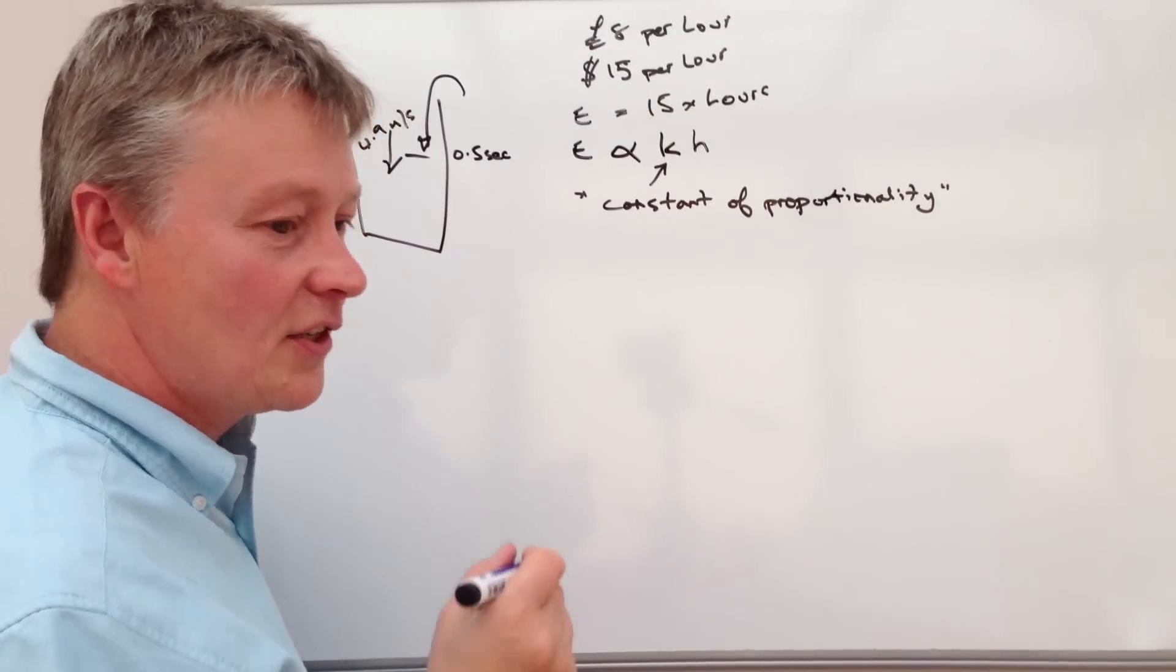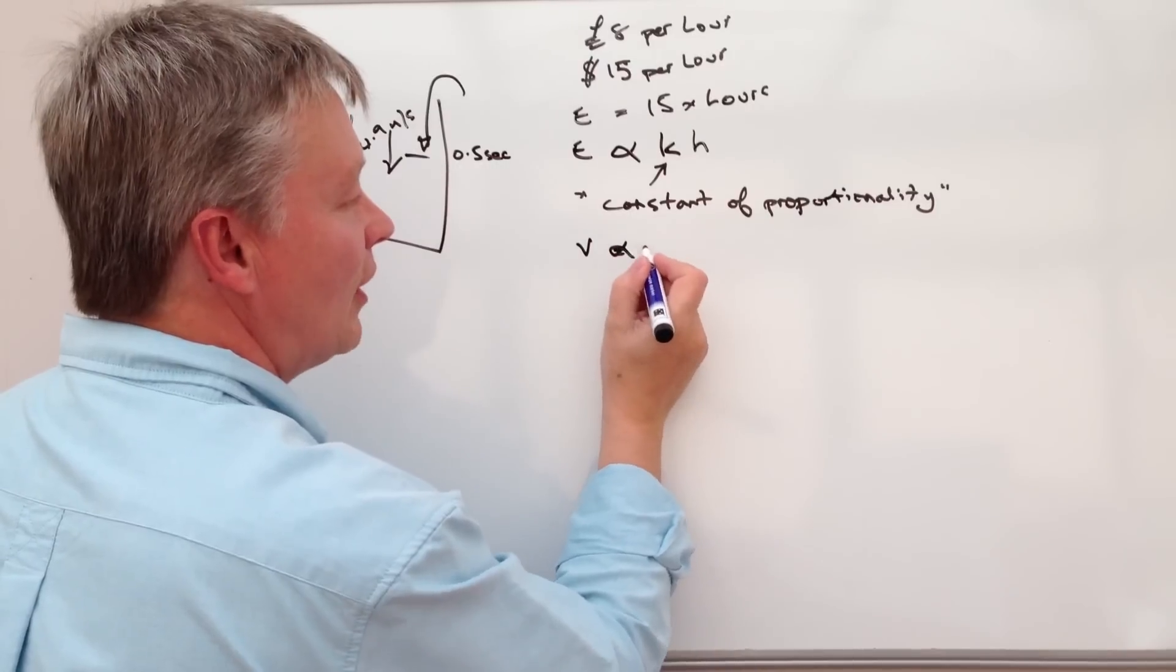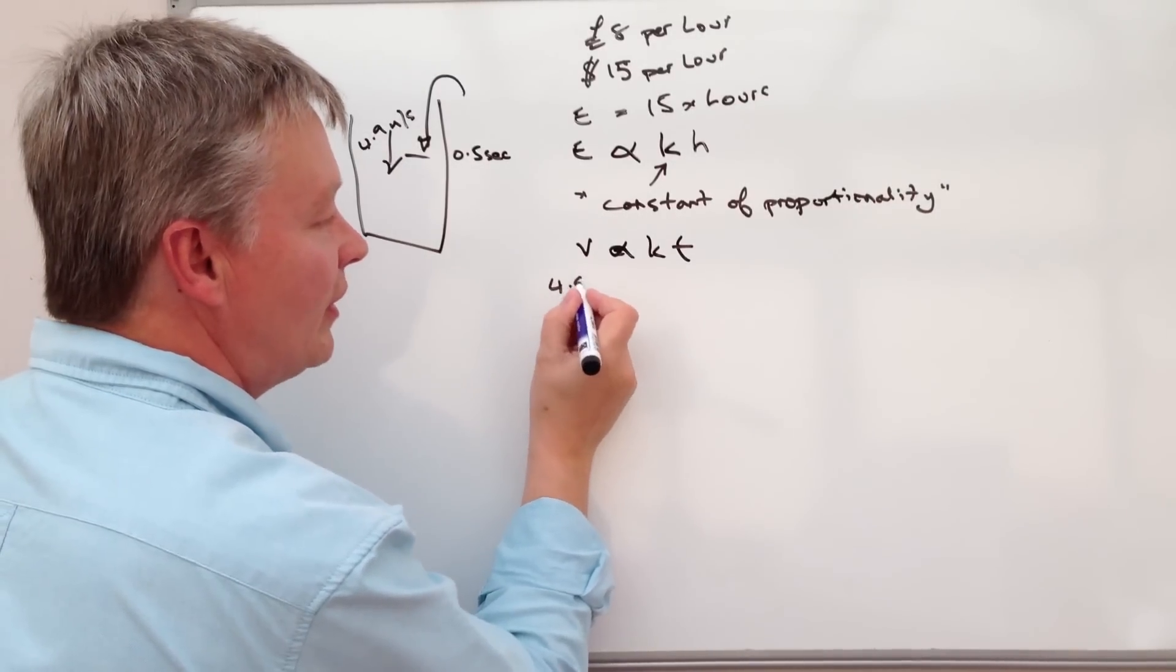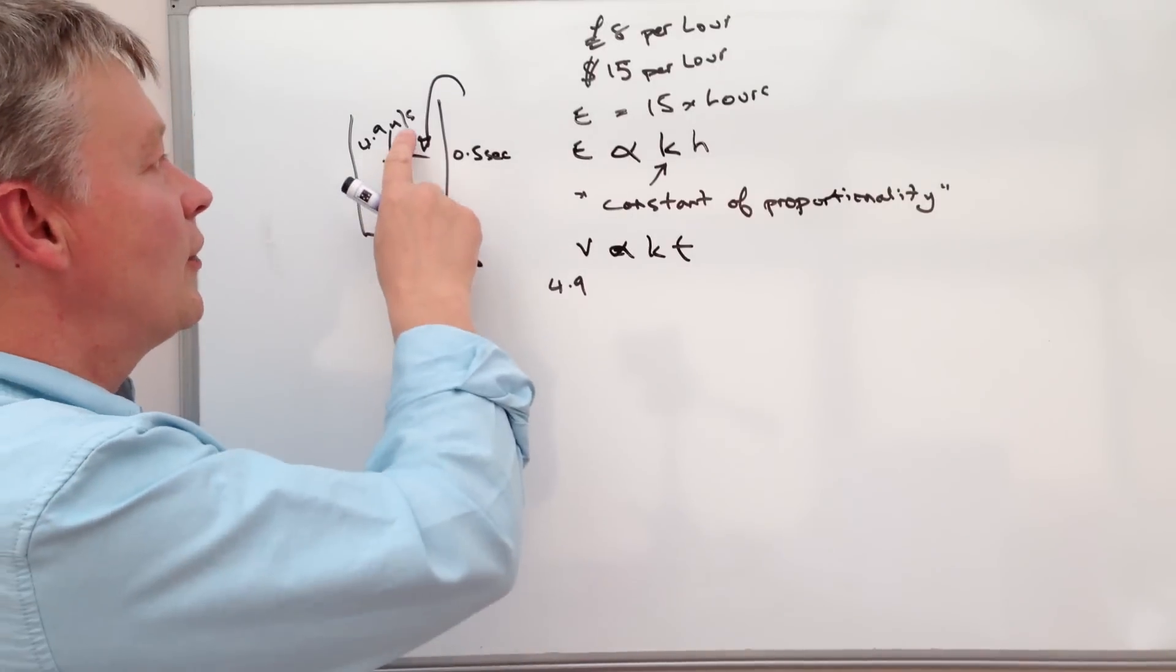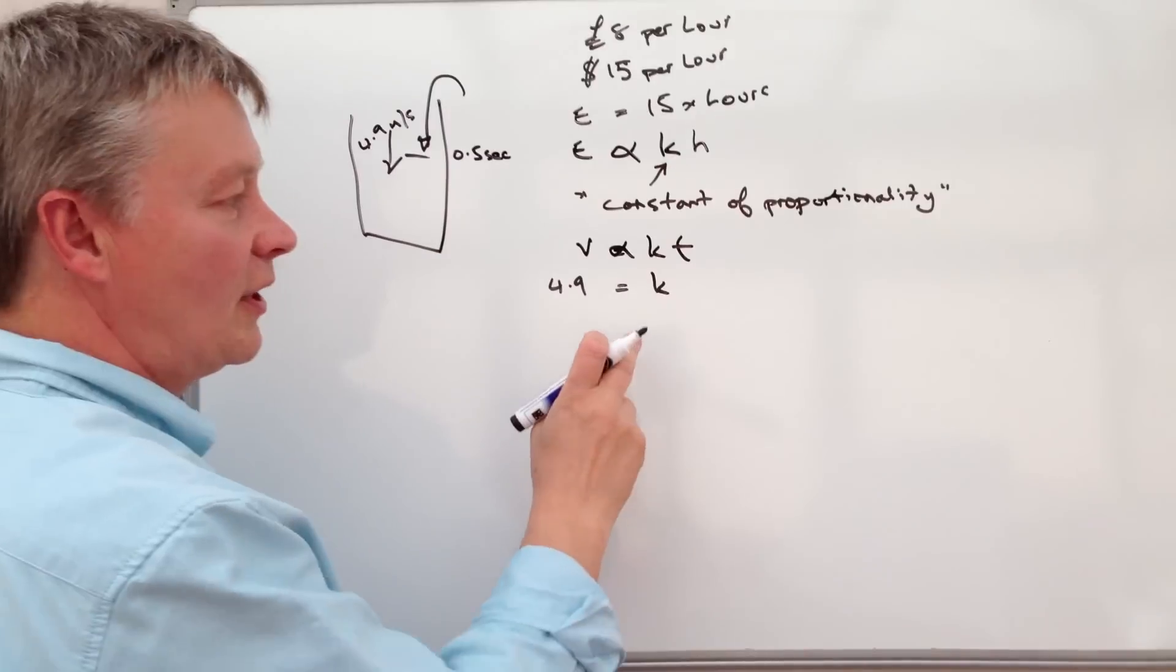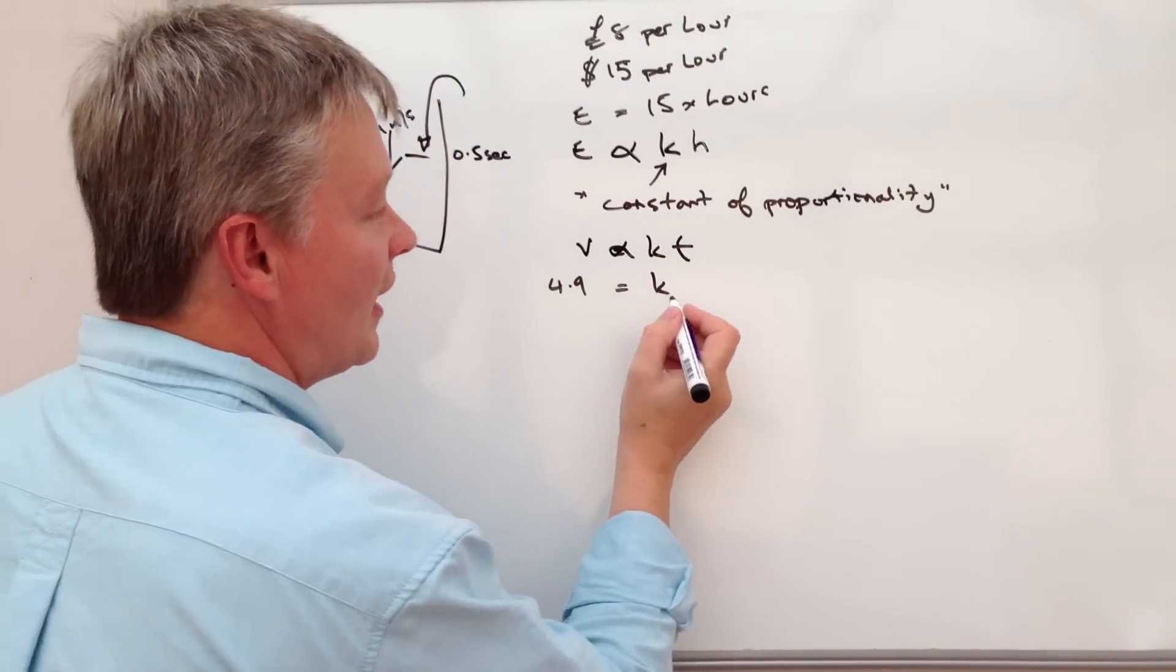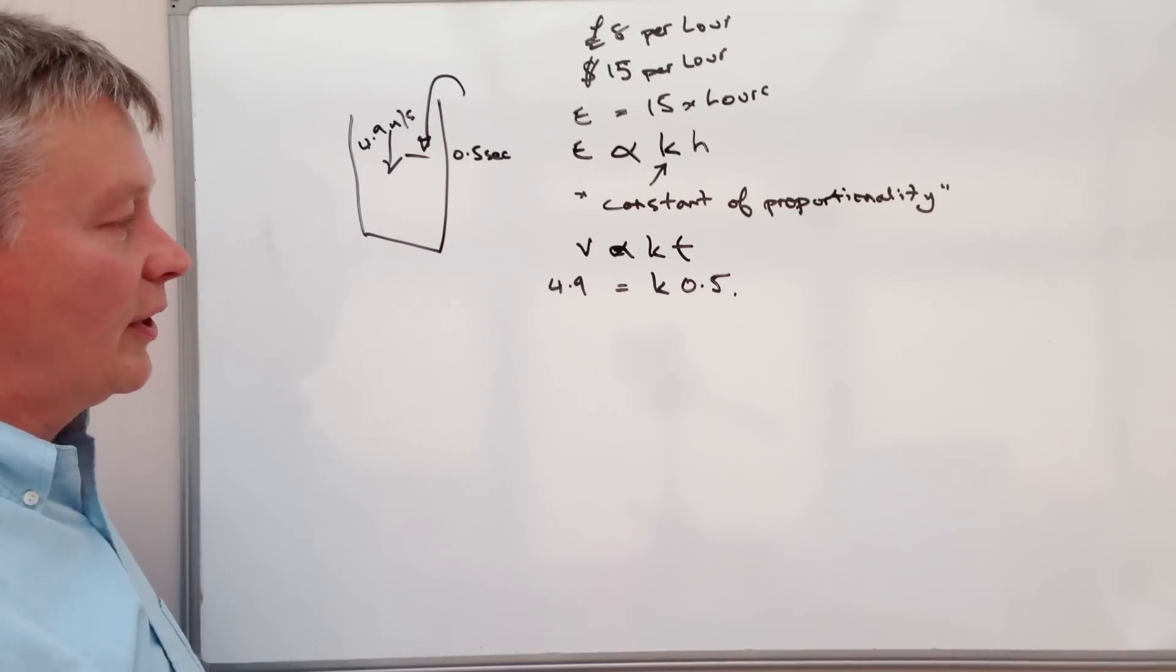So what we've got here is that it tells you that V is equal or proportional rather to KT. So the velocity is 4.9 metres per second. And again, you've got to make sure that you've got the same units because you need to make sure that in order to calculate K, you're using the same units throughout your equation. So it's K times 0.5.